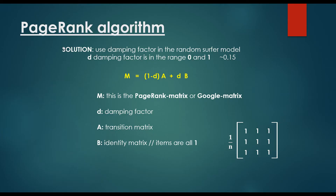So far we have been discussing the iterative formula and how to construct the transition matrix, but we have come to the conclusion that it's not going to work fine for all of the situations on the world wide web. This is why the solution is to use the damping factor in the random surfer model.